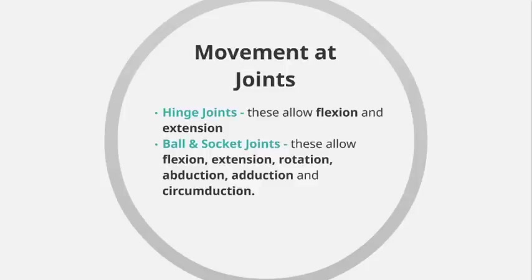Ball and socket joints — the hip and the shoulder — allow a full range of movement: flexion, extension, rotation, abduction, adduction, and circumduction. To recap: the elbow and the knee allow flexion and extension. The hip and the shoulder allow flexion, extension, rotation, abduction, adduction, and circumduction.